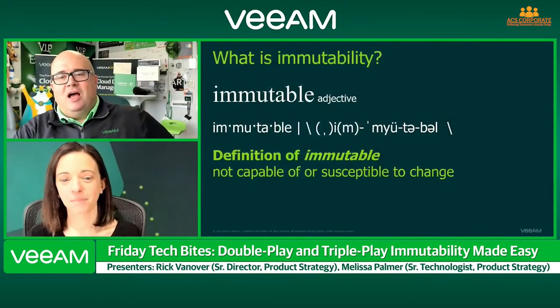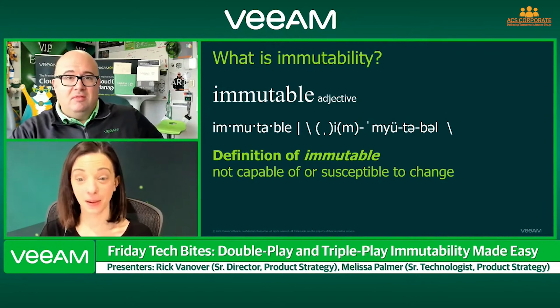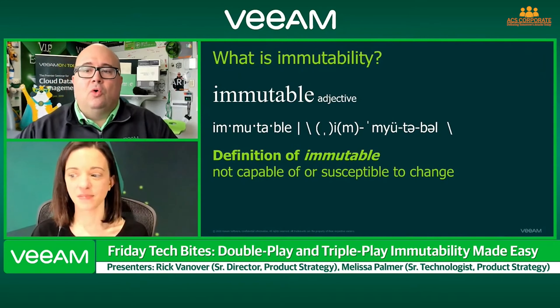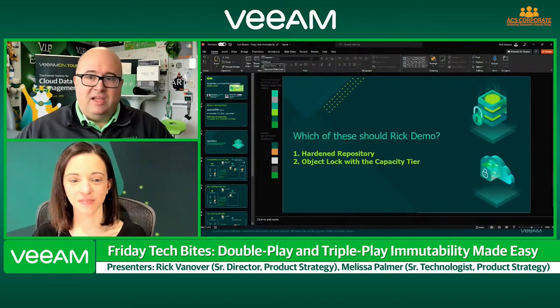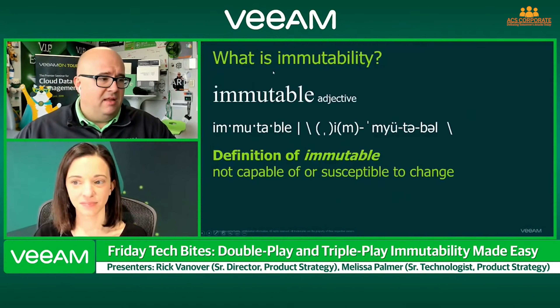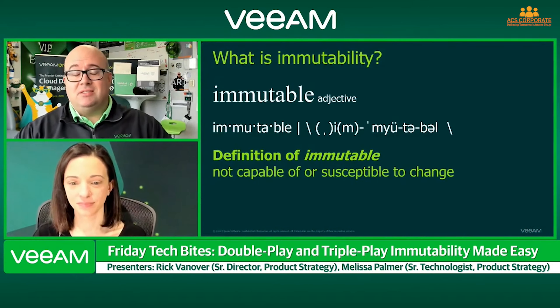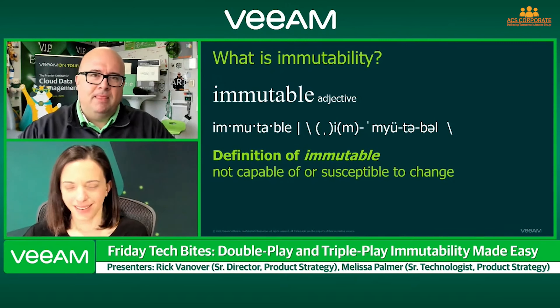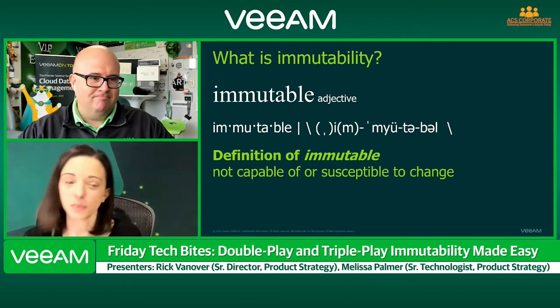Immutability in my world means two simple things: my data can't be changed and it can't be deleted. I did build a definition — data is not capable or susceptible to change. That's important because the data we have, especially backup data, is critical for dealing with that one thing that keeps happening in the industry. Melissa, what could that be? Ransomware. Yes — ransomware.